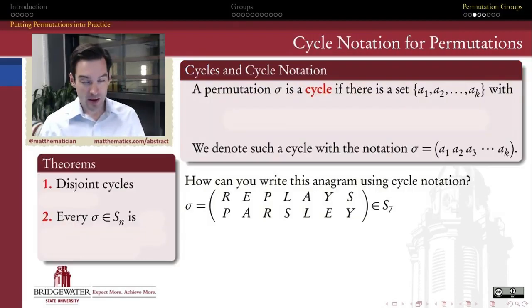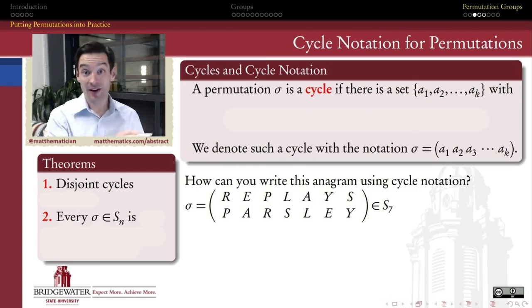Well, good news and bad news. The bad news first. Not every permutation is what we'll call a cycle. The good news, as we'll see in a few minutes, is that every permutation can be expressed in terms of cycles. So if we can figure out how cycles work, they will give us the key to understanding how all permutations work.